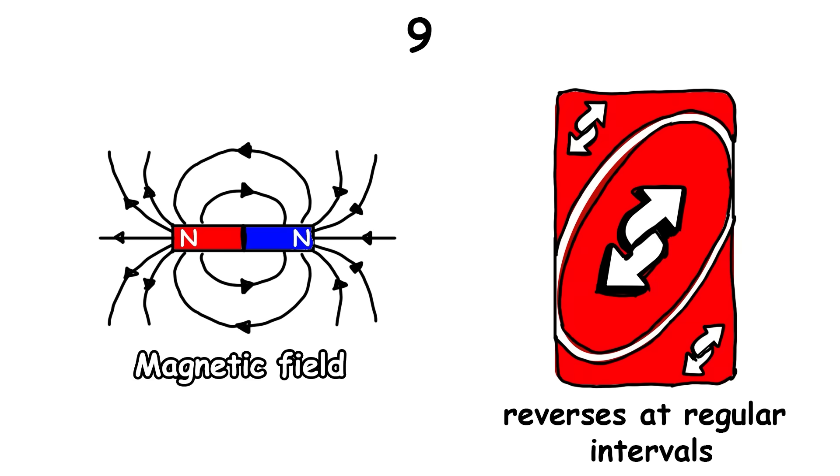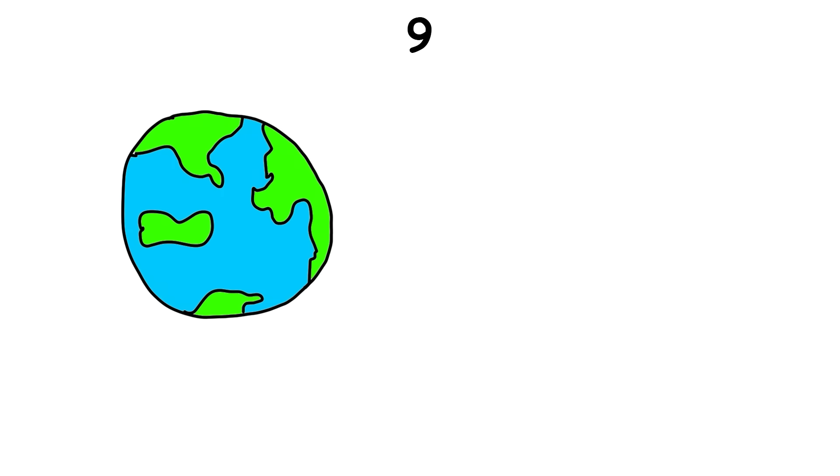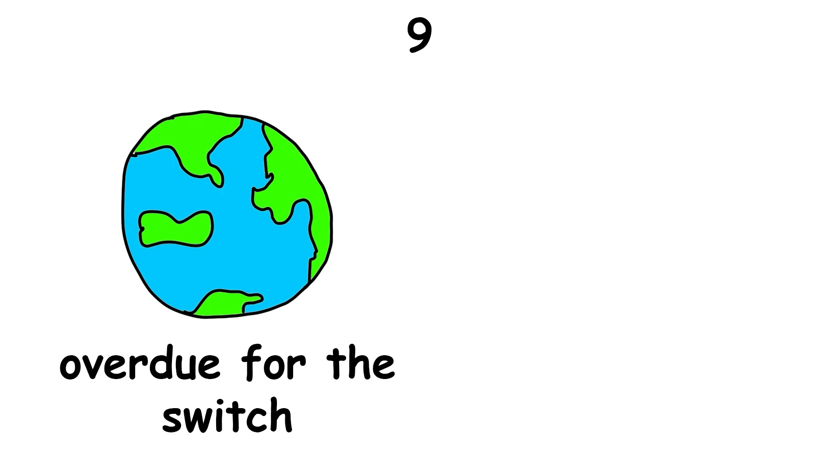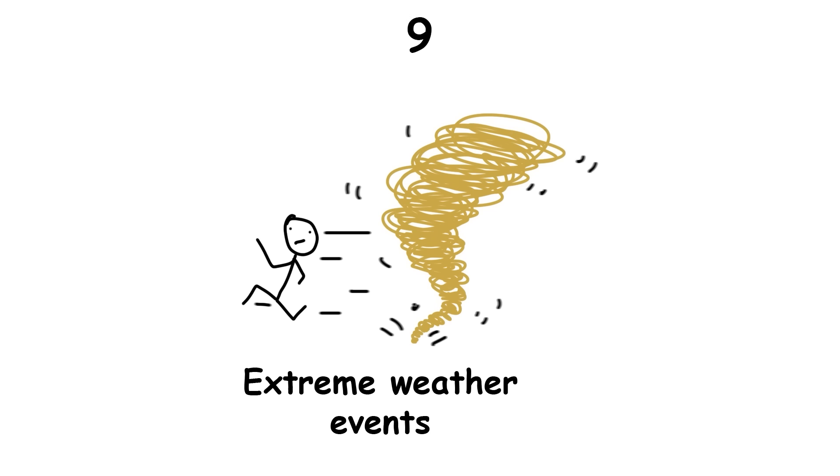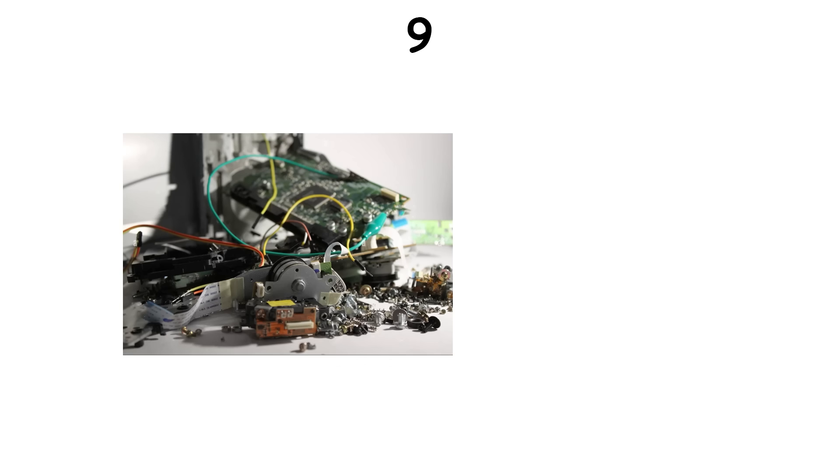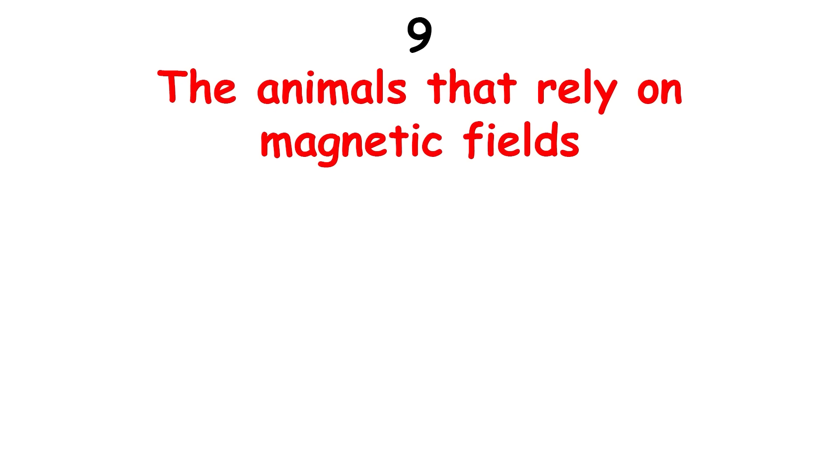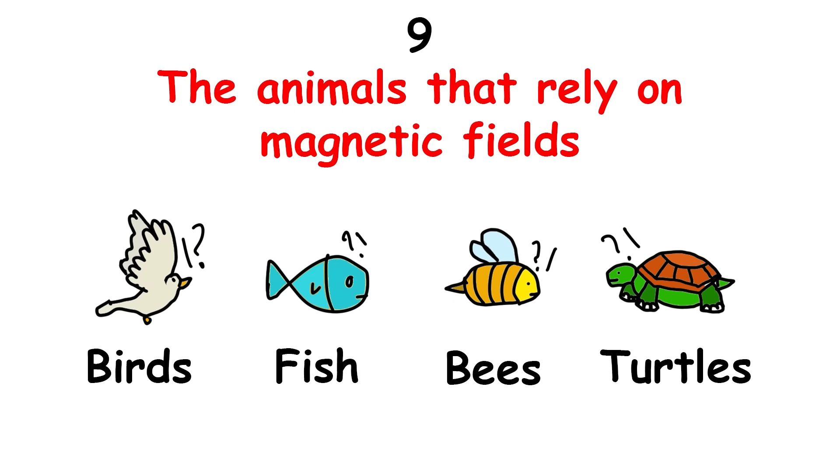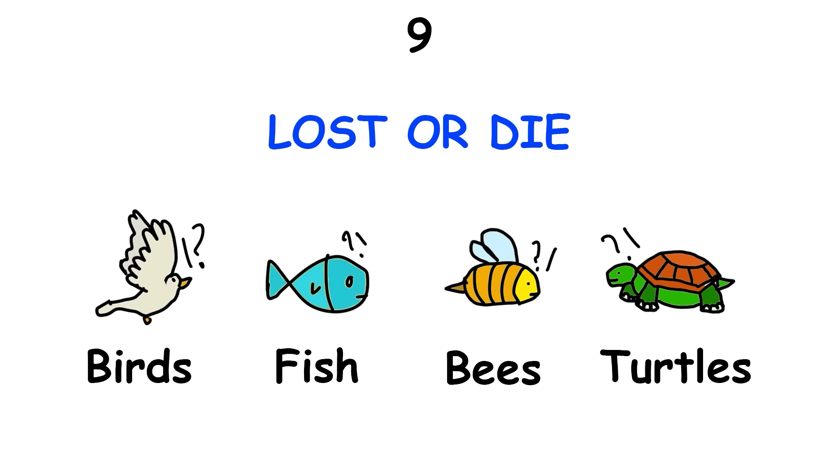The magnetic field of objects usually reverses at regular intervals, and Earth is overdue for the switch. When it happens, we don't know what it will cause, but it's expected that we'll see extreme weather events, that most technology will break and take a while to fix, and that animals that rely on magnetic fields like birds, fish, bees, and turtles will be so confused that they will either get lost or die.